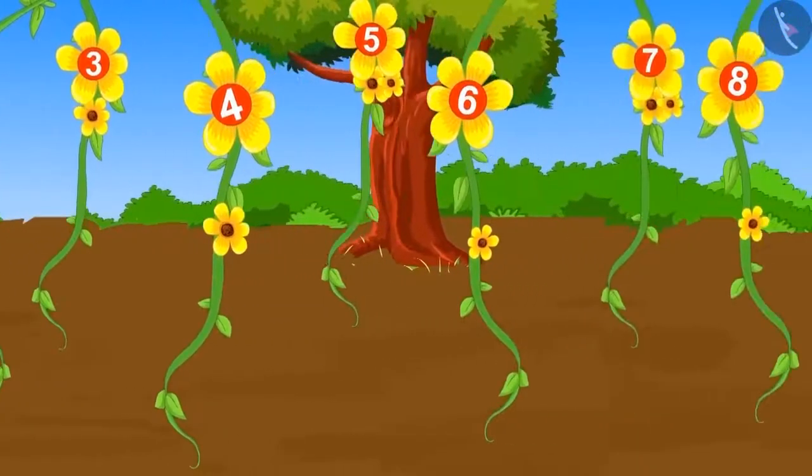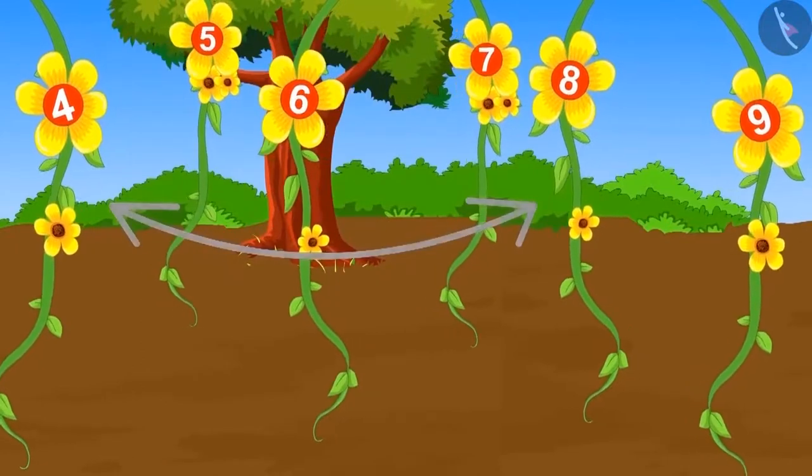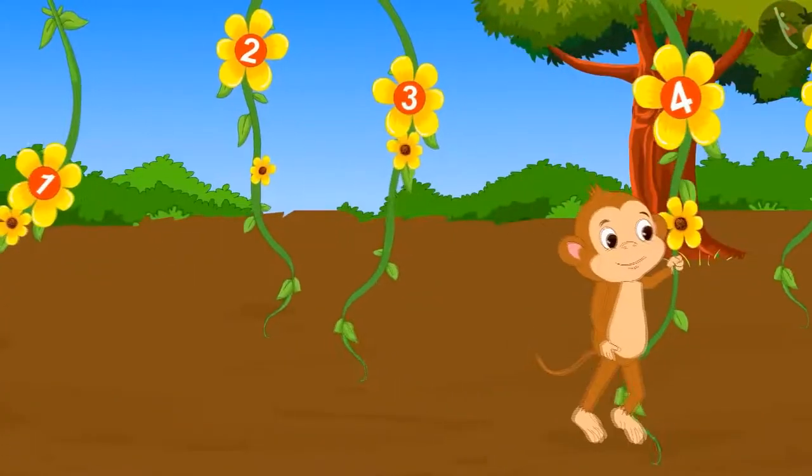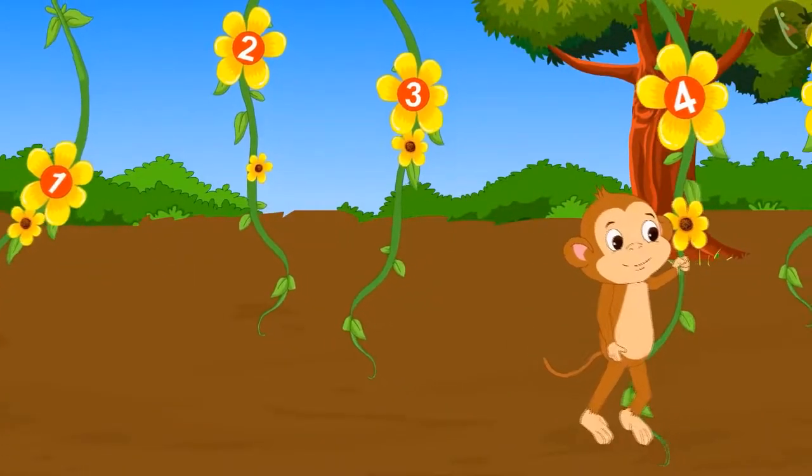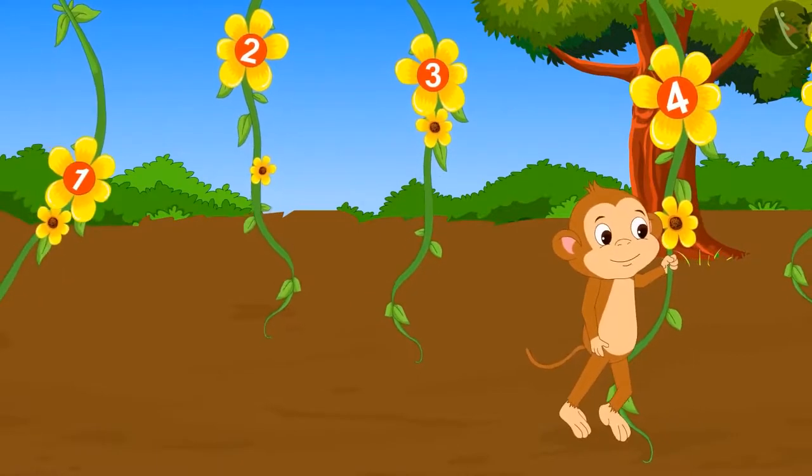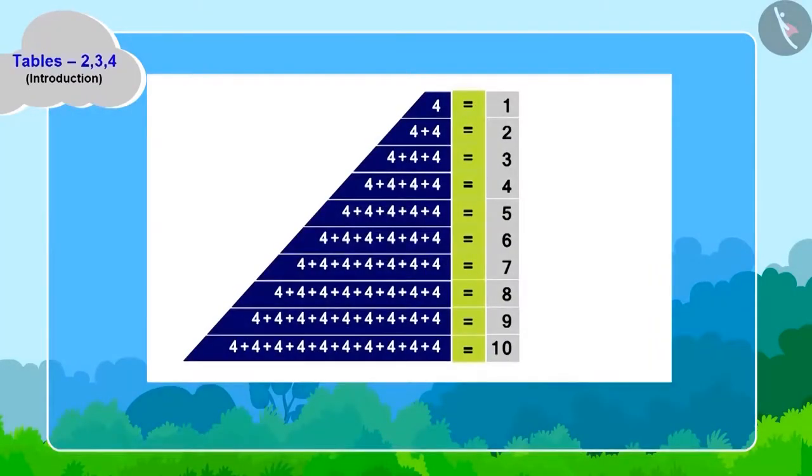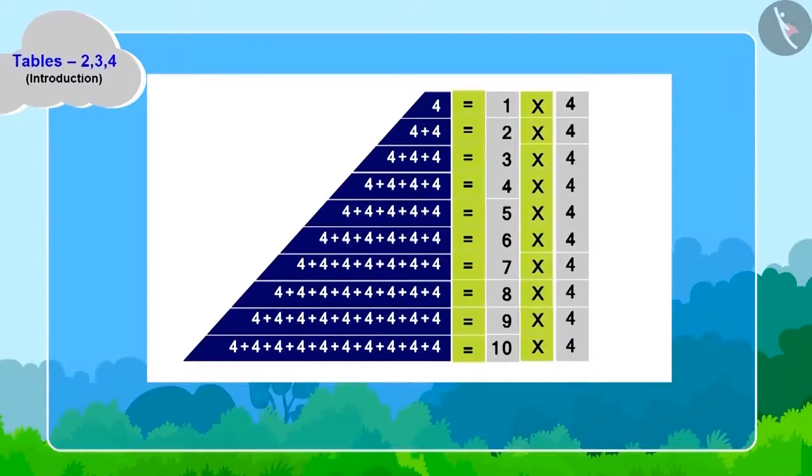Babban can cross four creepers in one jump. He took the first jump and hung to the fourth creeper. Now, can you make the table of four by adding four to each of Babban's jumps?